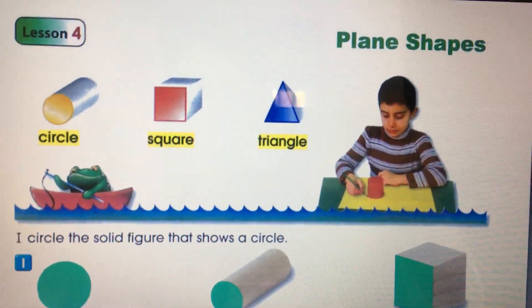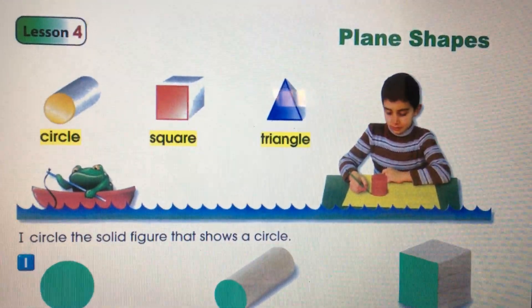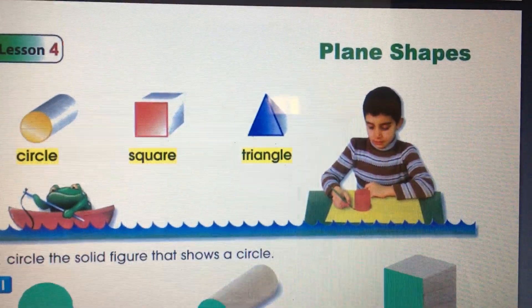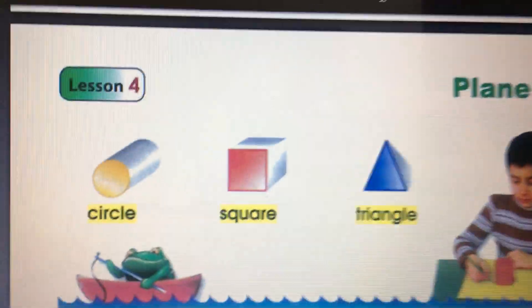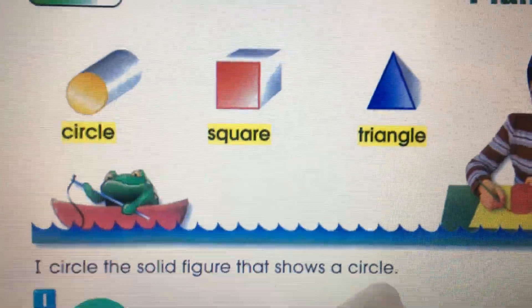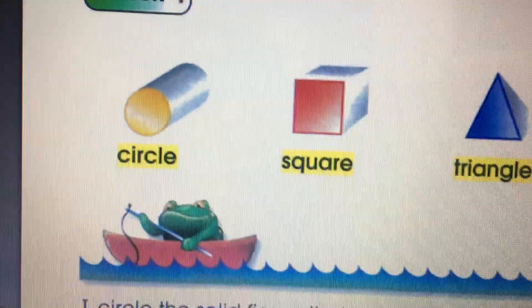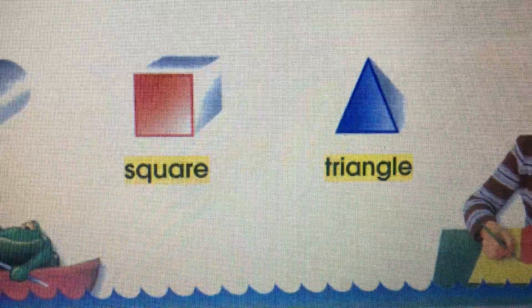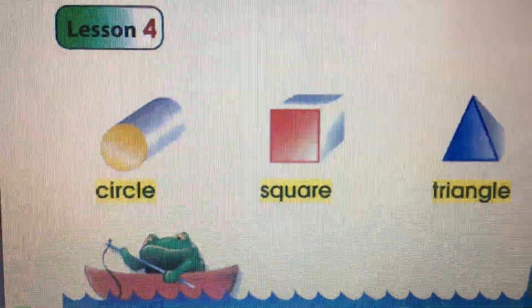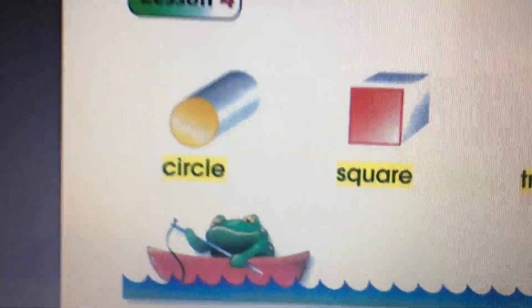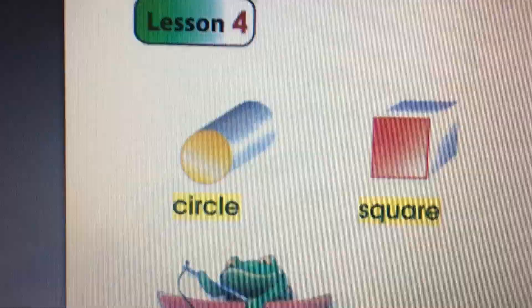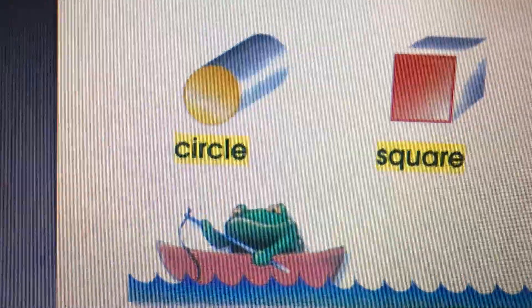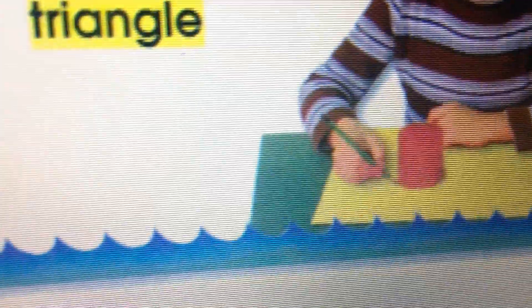Hello lovely, how are you all today? I'm going to talk about the flat shapes for you. As we learned from the previous lesson, we have three 3D shapes: cylinder, cube, and pyramid. Each one of the 3D shapes has a face. The face of the cylinder is called a circle.